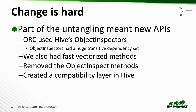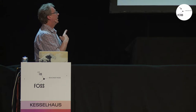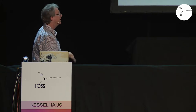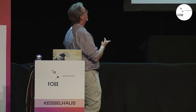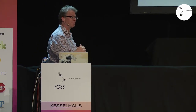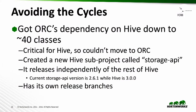Part of the work was defining new APIs. ORC had used Hive's object inspectors, which was easy when we were inside Hive, but they had a huge dependency set downstream. Fortunately, we had also implemented fast vectorized methods — the ability to process batches of 1,000 rows at once instead of row by row. So we got rid of all the object inspector methods, kept just the vectorized methods, and put a compatibility layer into Hive so old users wouldn't break. That got us down to around 40 classes.